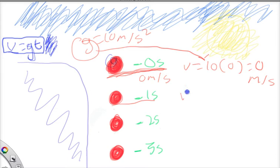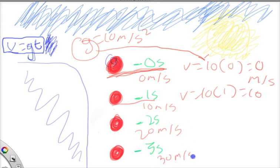Now at one, let's plug it in. V is equal to 10 times one is 10. So 10 meters per second. Now two, we're just going to expedite it a little bit. 20 and three, 30 meters per second.